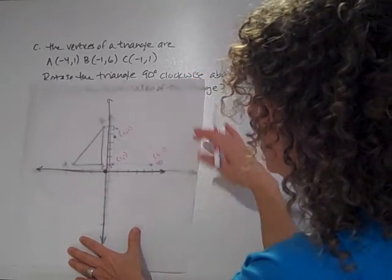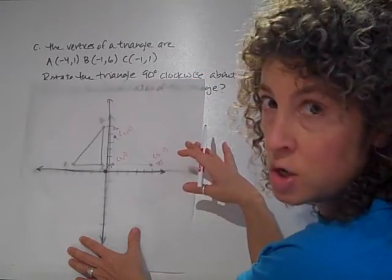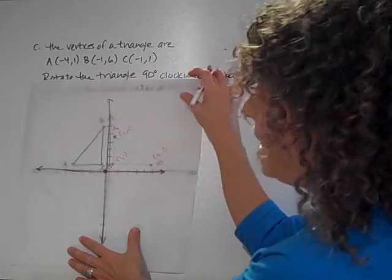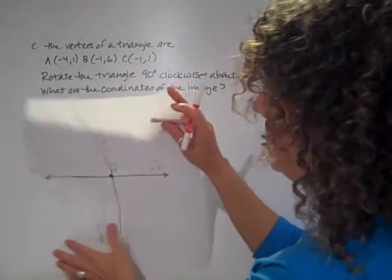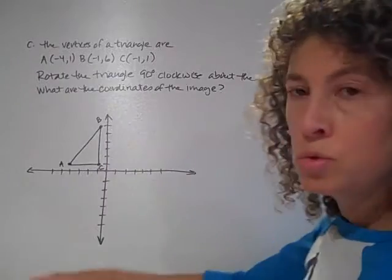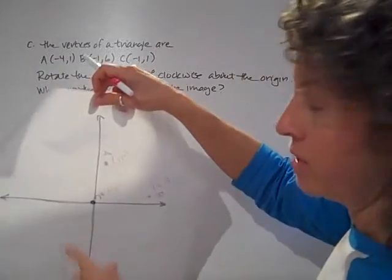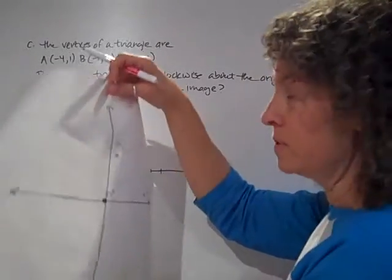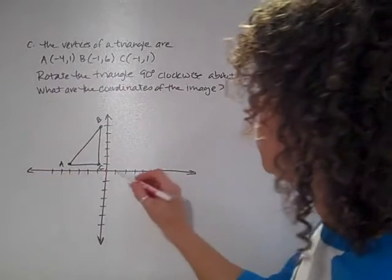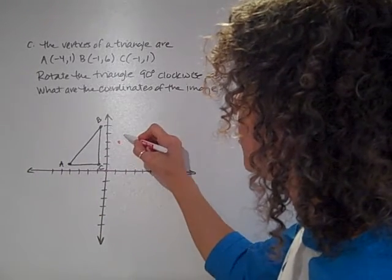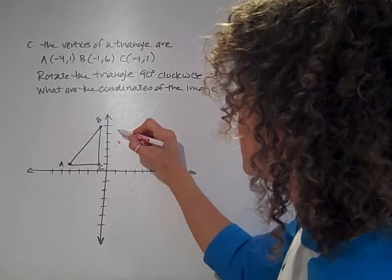And I know that when I draw my new figure, it's going to be here in the first quadrant, and A should be up at the top. So I can take my patty paper off, and I'm going to use those ordered pairs that I just came up with. So A should be at (1,4). So I'm going to come over here, up to (1,4). Here is my A.